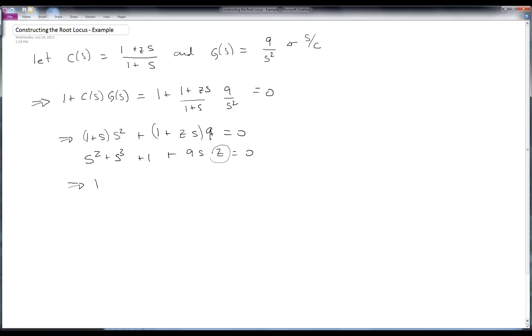Now I divide through and end up with 1 plus z times 9 s all over s to the third plus s squared plus 1 equals 0. So this is the transfer function that I want to look at to find out what's going to happen as I vary z and what happens to the poles of this system.